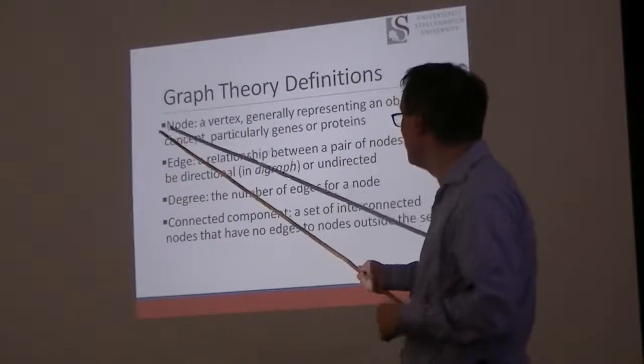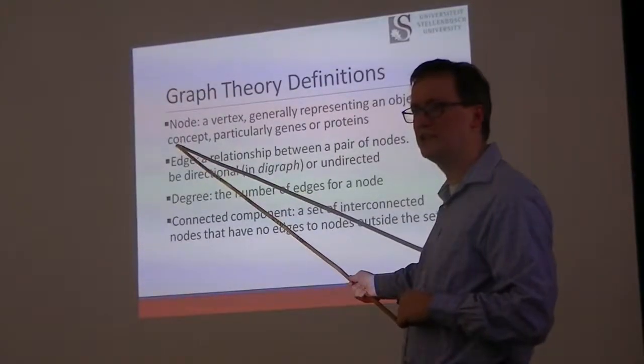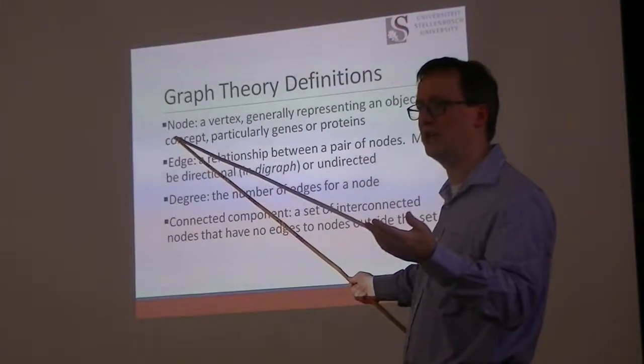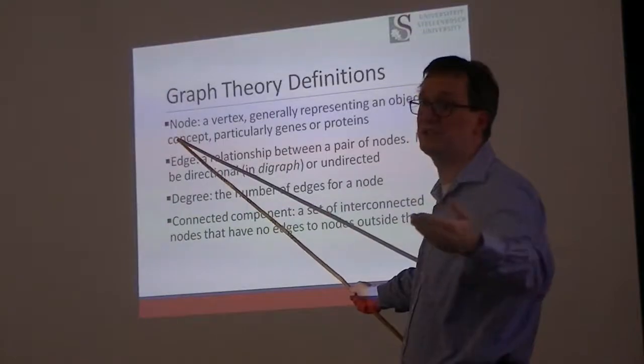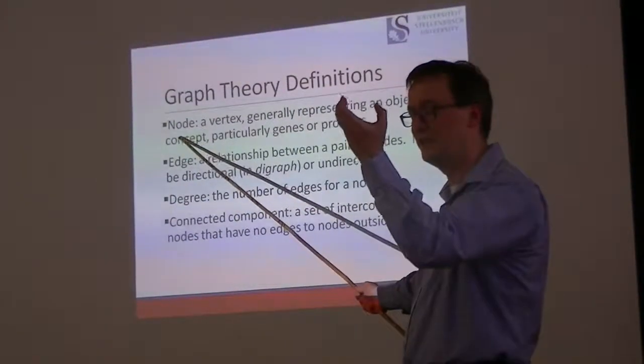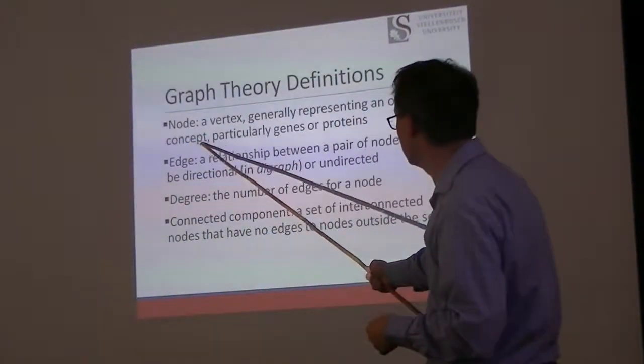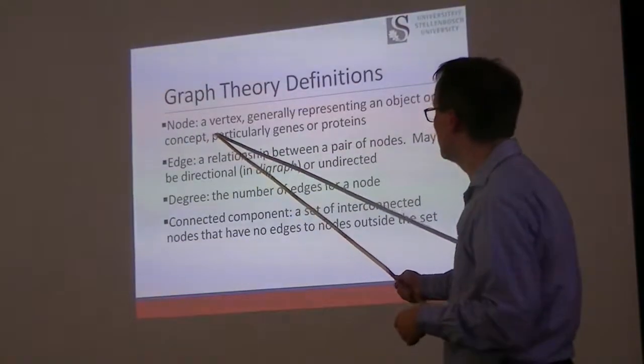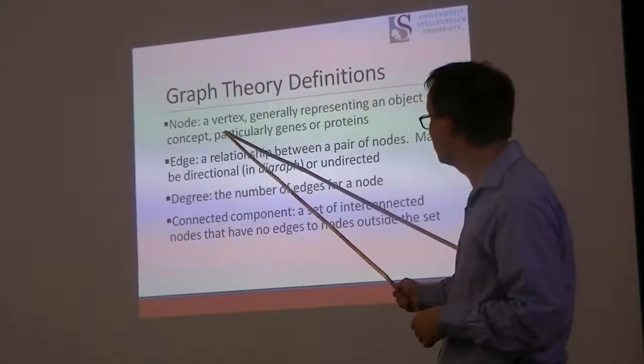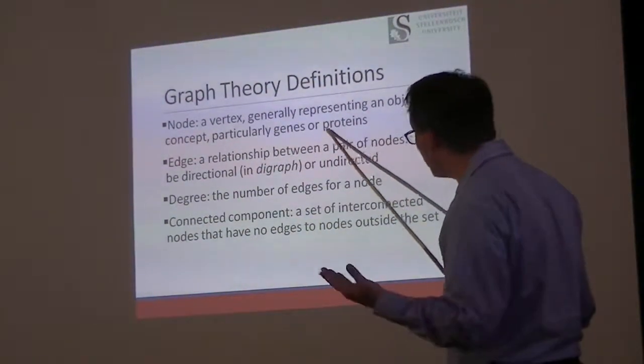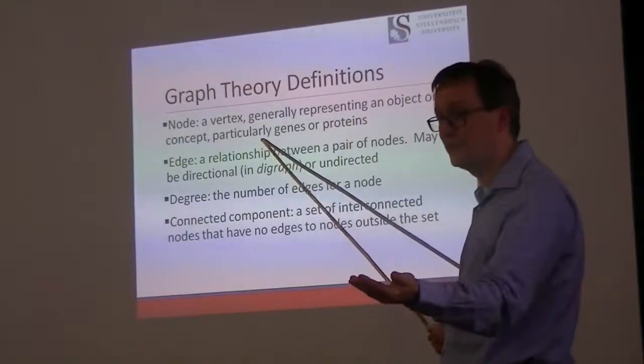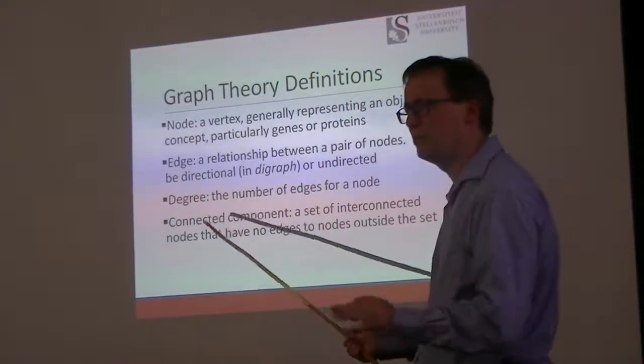I threw a pretty hefty one a bit ago: the network module. Let's try to get from here to there. We start with nodes. I think everyone has a kind of a notion around here. Typically, in our gene-gene interaction maps, the nodes represent genes. These are the sort of physical concepts that exist in the graph space. Another name for a node is a vertex. It generally represents an object or a concept, particularly genes or proteins.